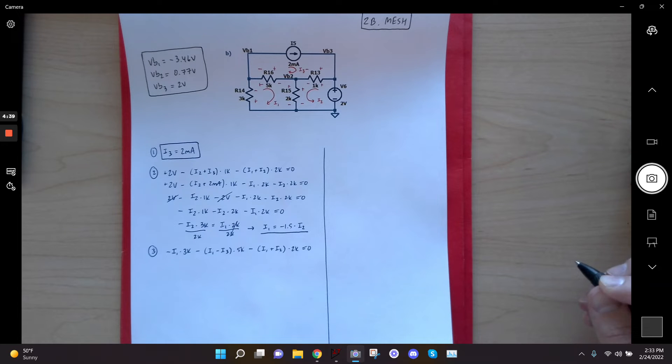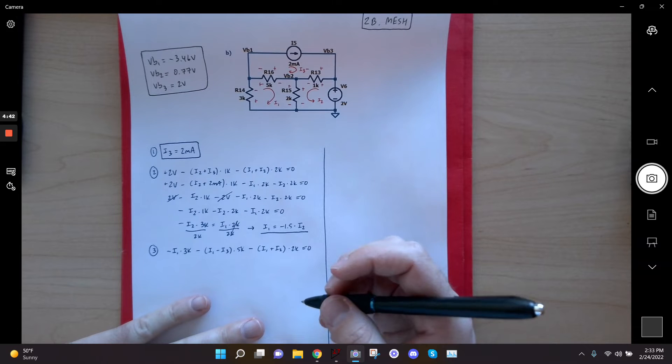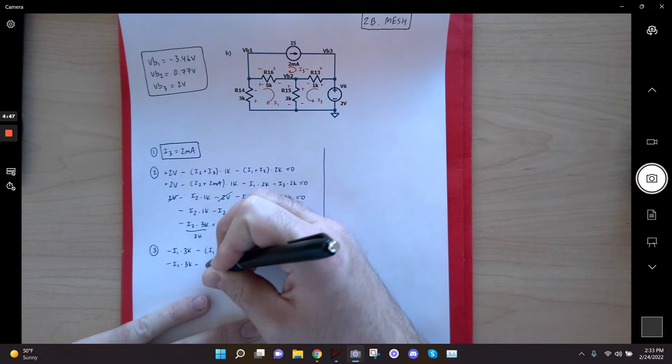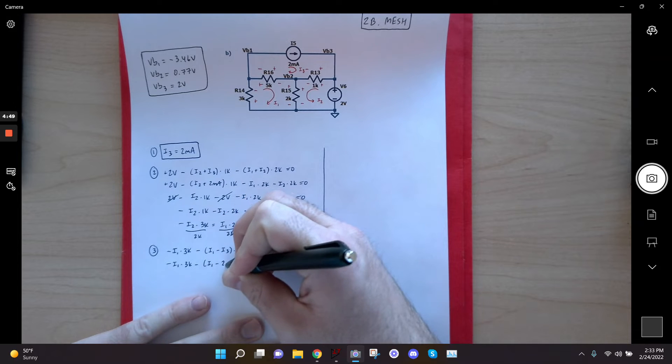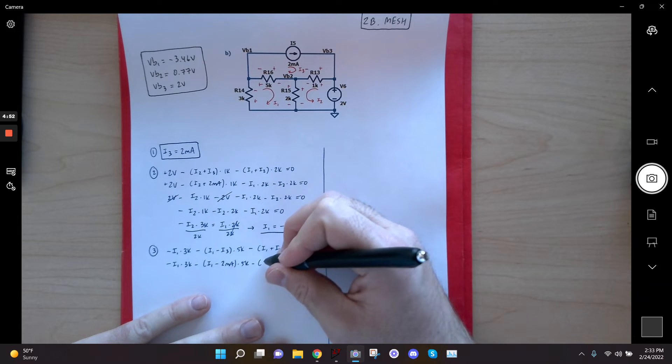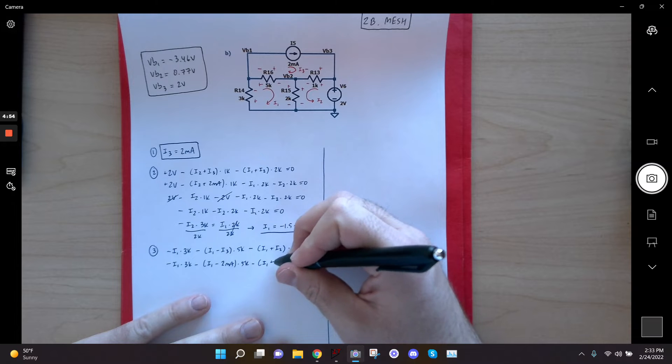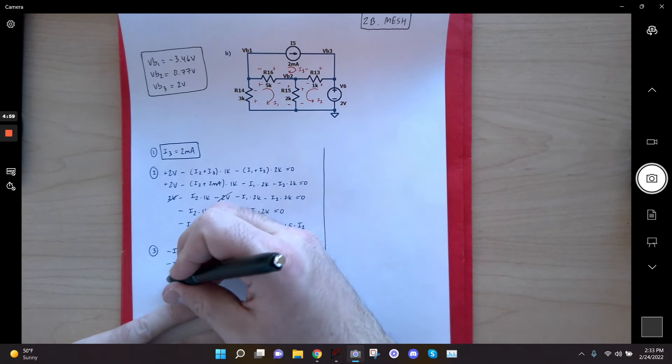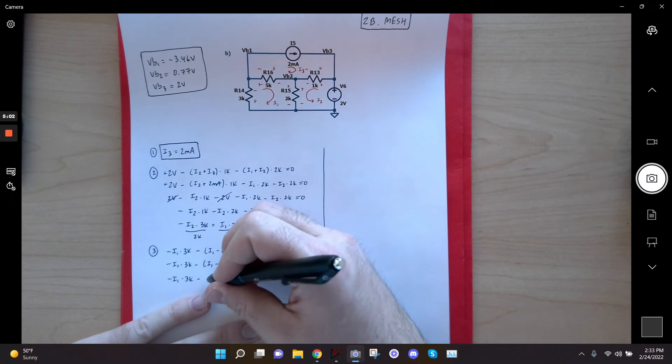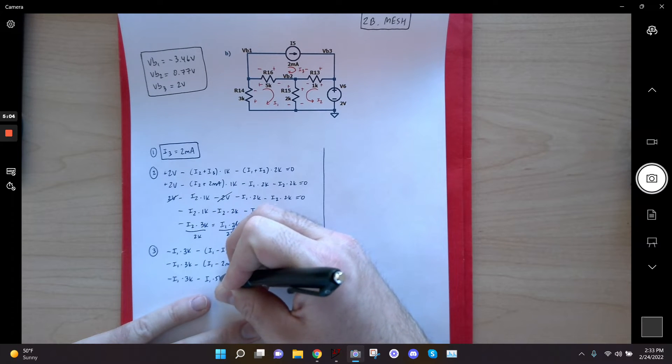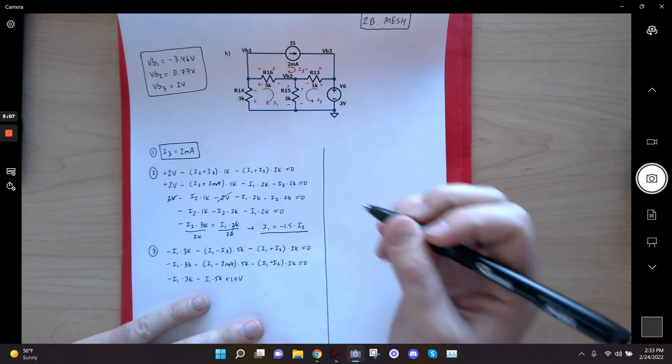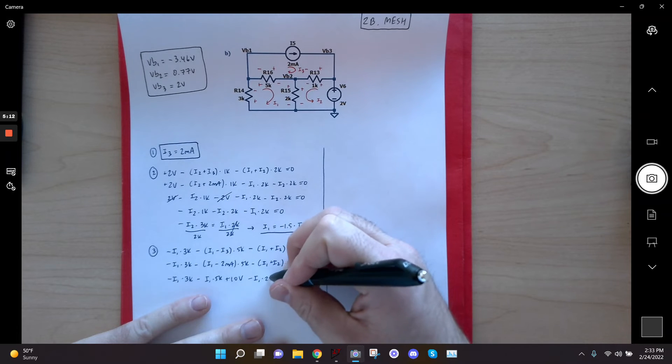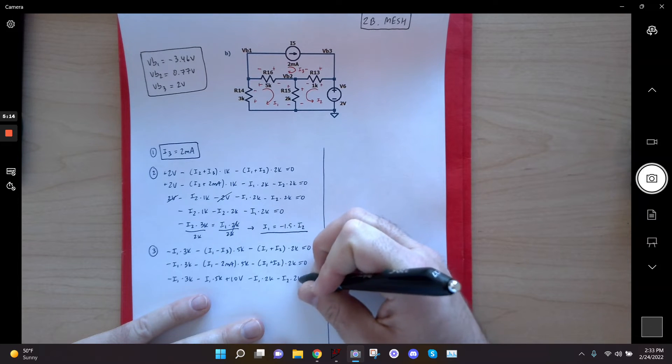All right, so now the last thing I'm going to do is I'm going to go ahead and simplify this equation so I can plug in, again, I3 for, or 2 milliamps for I3 right here. And then over here, I can just say minus I1 plus I2 times 2K. I'm going to go I1 times 3K, I1 times 5K. And then that gives me a plus 10 volts, right? The distribution there. Minus I1 times 2K minus I2 times 2K gives me 0.